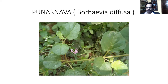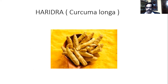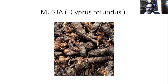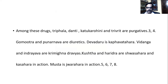Punarnava is Boerhavia diffusa — the roots are used. Haridra is Curcuma longa — the tuber is used, and curcumin is the active principle. Devadaru is Cedrus deodara, available in the Himalayas, and the heartwood is used. Musta is Cyperus rotundus — the tuber is used. Triphala is a combination of three myrobalans: Haritaki, Vibhitaki, and Amalaki — the fruits are used.